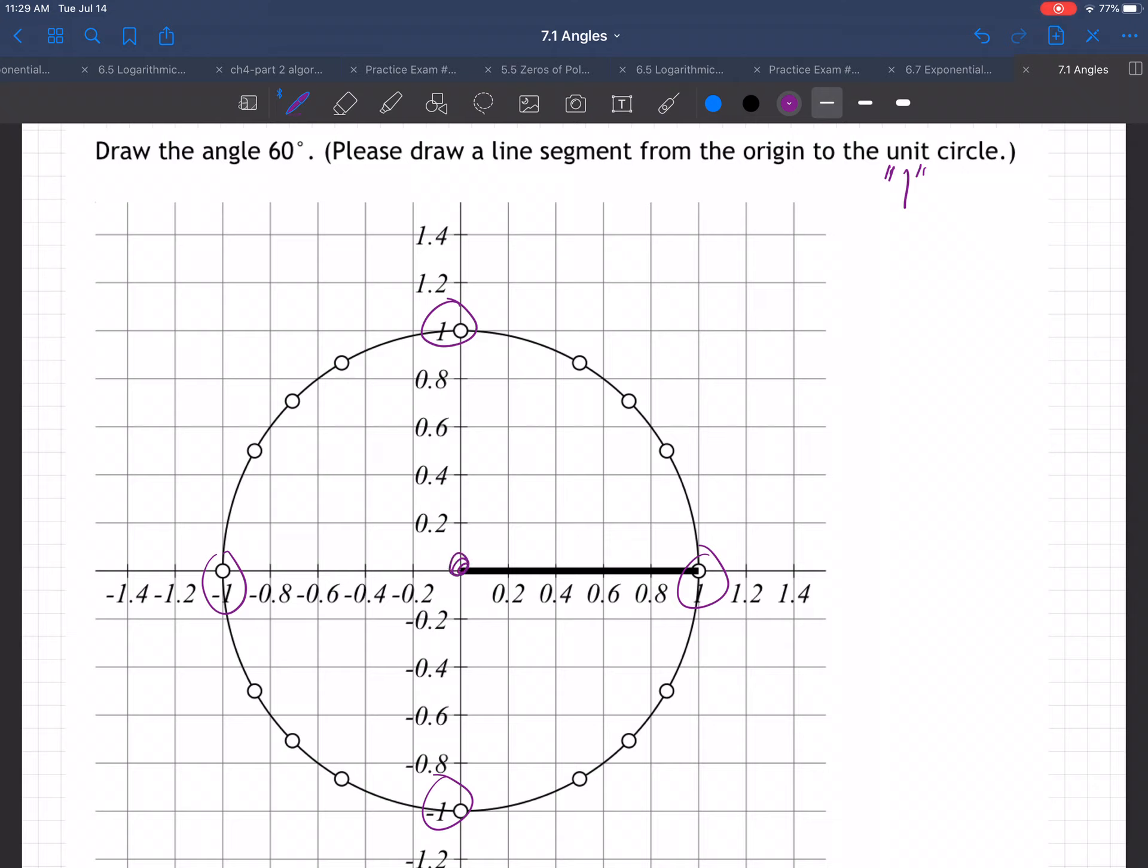Remember the radius of a circle is how far from the middle to the edge. You could go to the edge straight to the right or up or left or down or you can go this way. All these distances are one. So this is the unit circle, the circle of radius one.